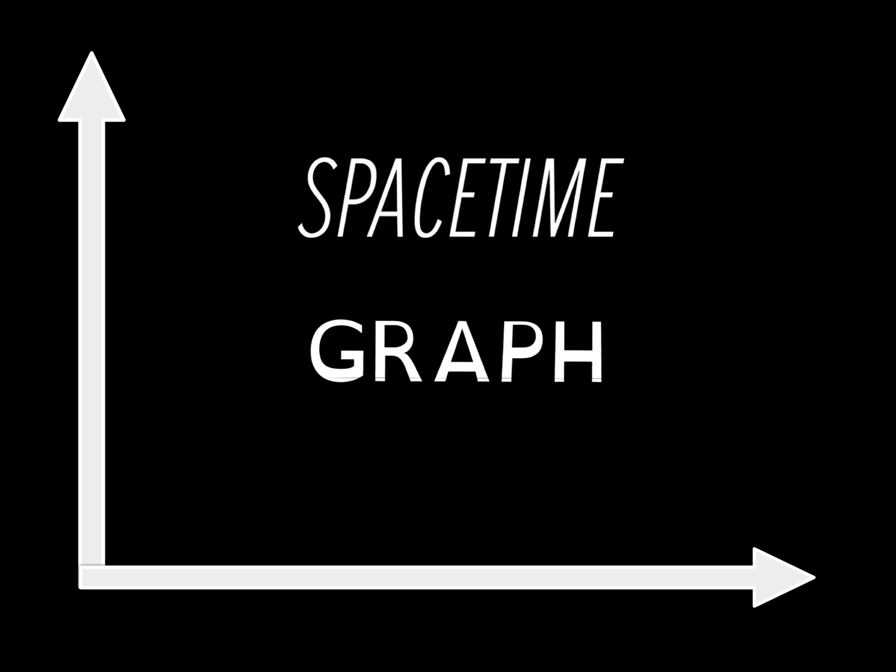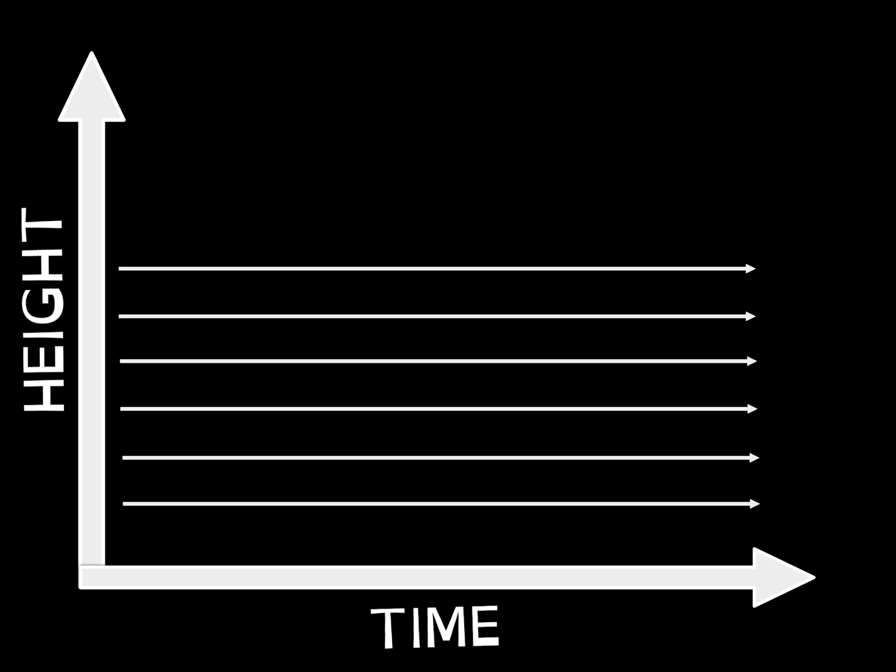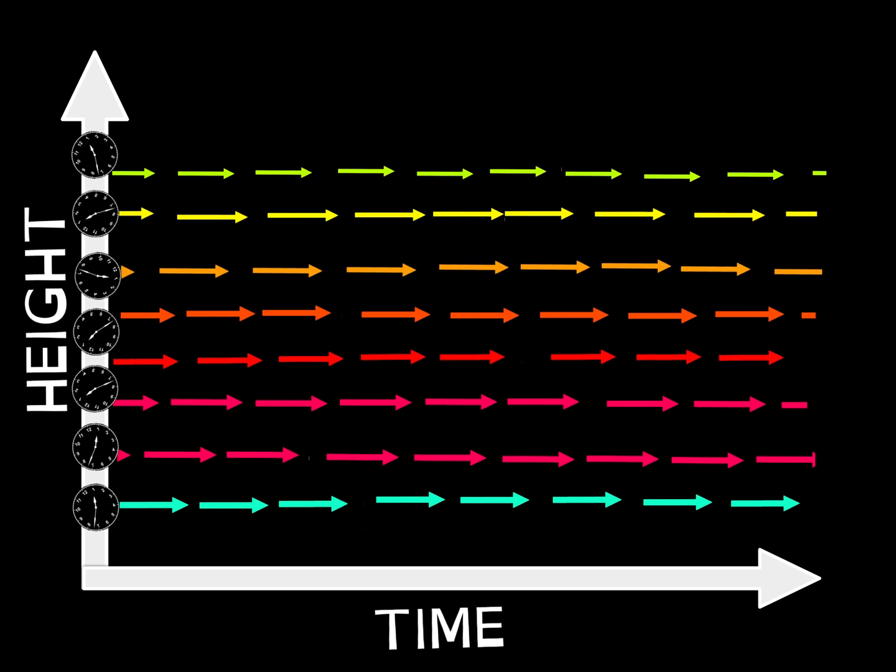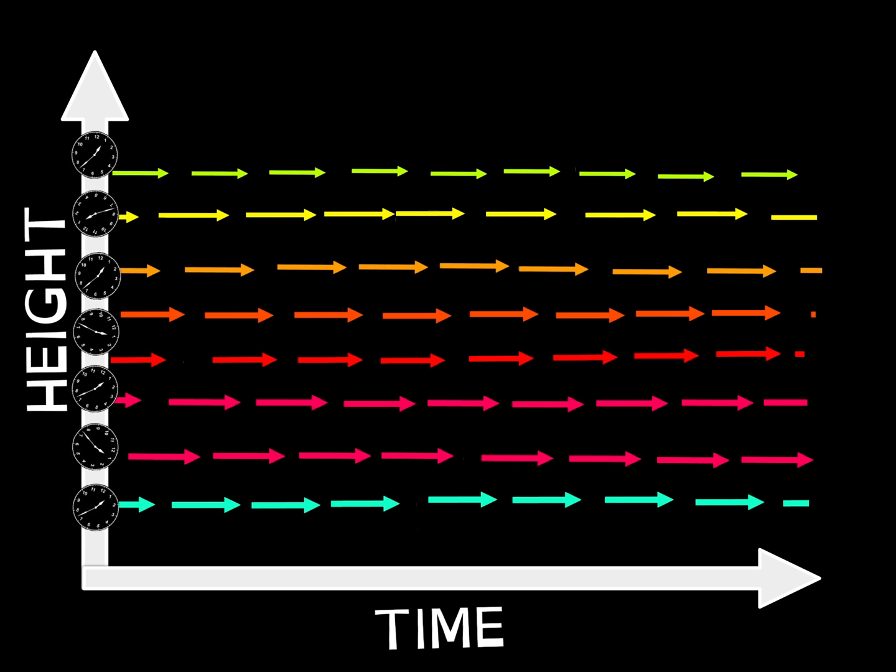Now this is our spacetime graph. Space axis, or we can say height, and there are a lot of time axes because as we know, the rate of flow of time is different for different heights.